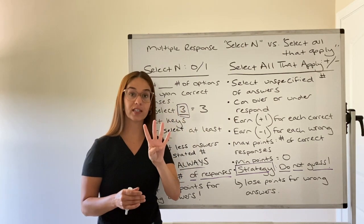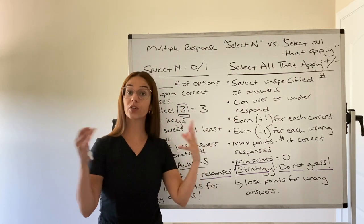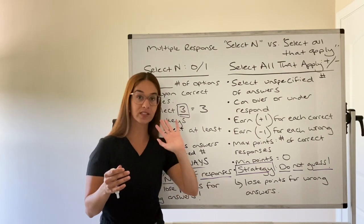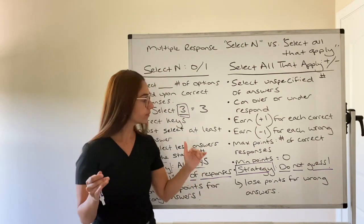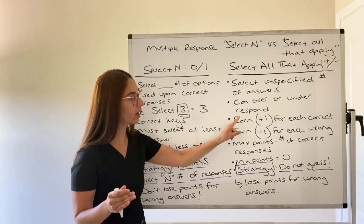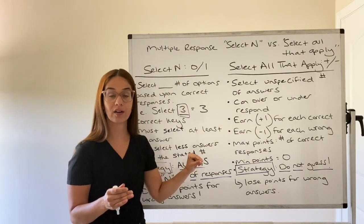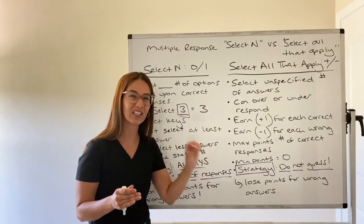Now you earn one point for each correct. You lose a point for each wrong. That's why your strategy is to not guess. If you know that there's absolutely two correct answers and you guess a third one and it's wrong, instead of two points, you're going to lose a point and you're only going to get one point.